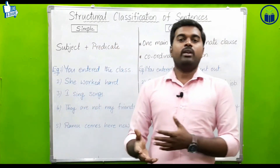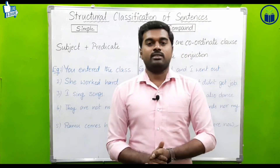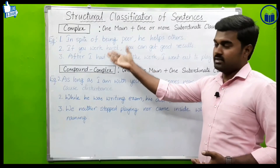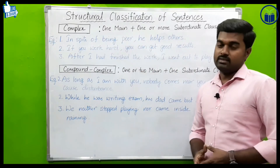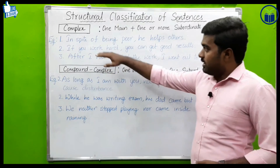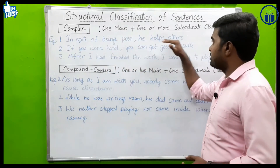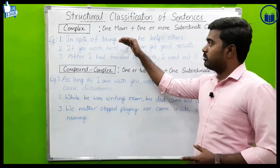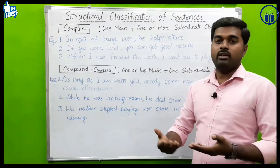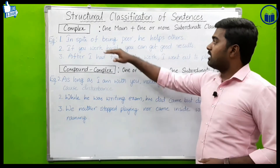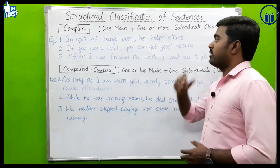Let us discuss complex and compound-complex sentence examples. A complex sentence consists of one main clause and one or more subordinate clauses. First example: 'In spite of being poor, he helps others.' Here there is one subordinate clause and one main clause.